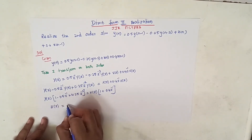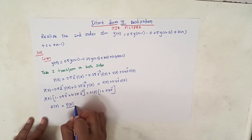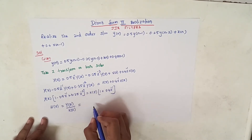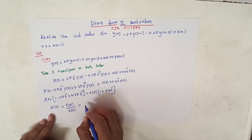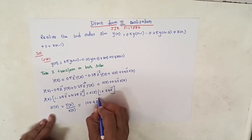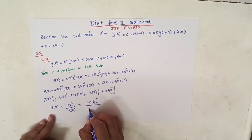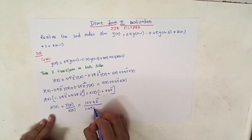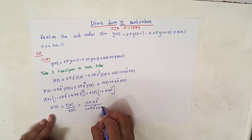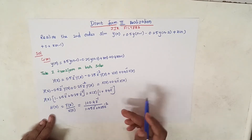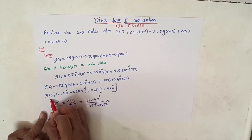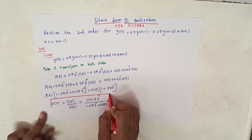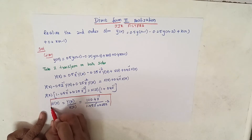We know that H(z) = Y(z)/X(z). So the transfer function becomes H(z) = (1 + 0.4·z⁻¹) / (1 − 0.5·z⁻¹ + 0.25·z⁻²). This is the required transfer function of the second order difference equation.